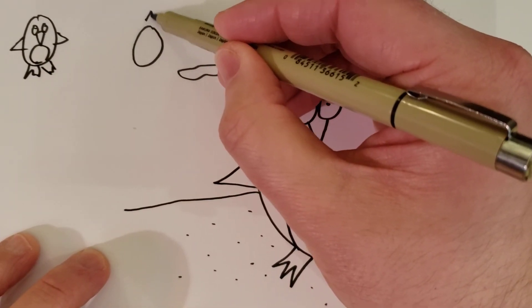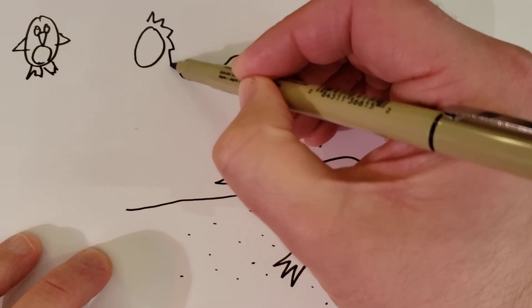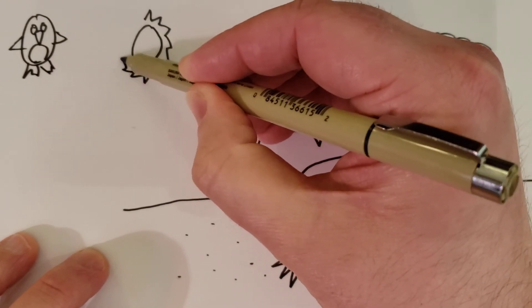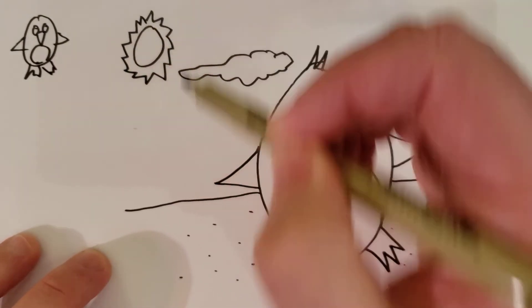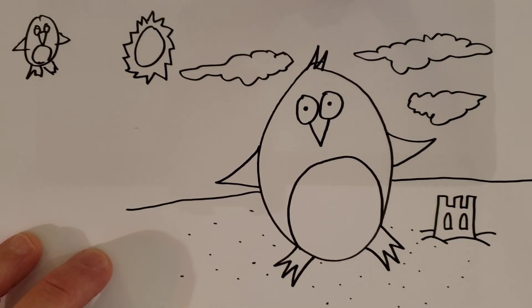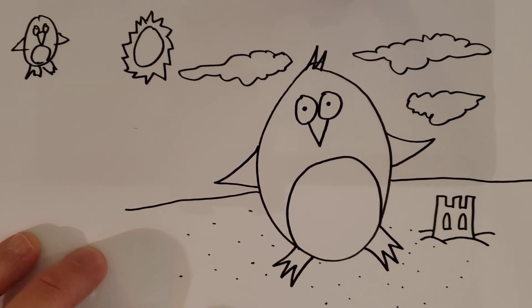I'm going to put little triangles like this for my sun in the sky, just like that. Alright, so there